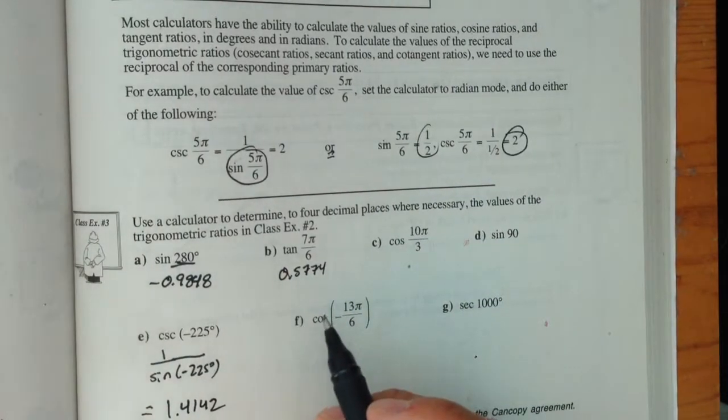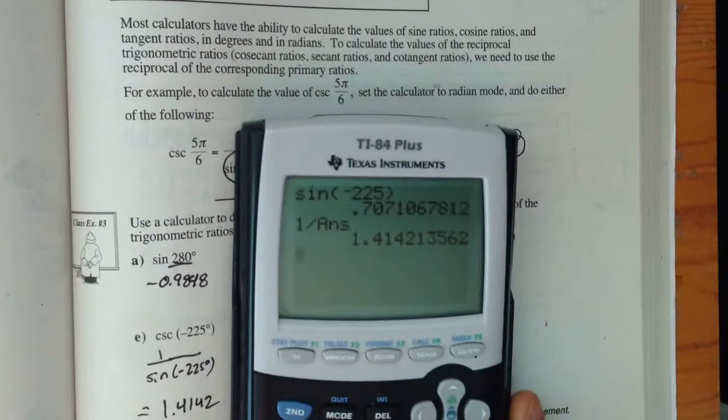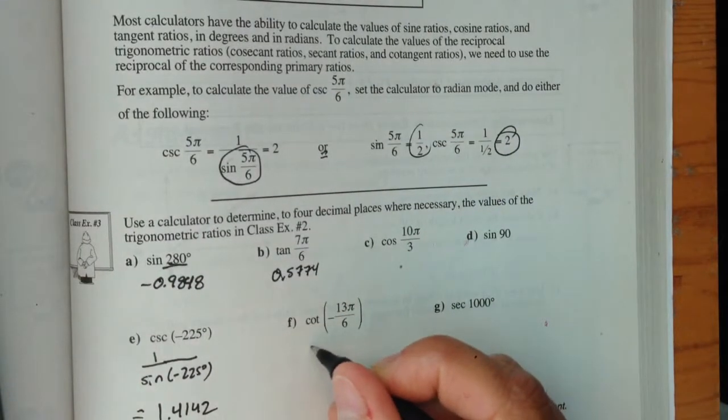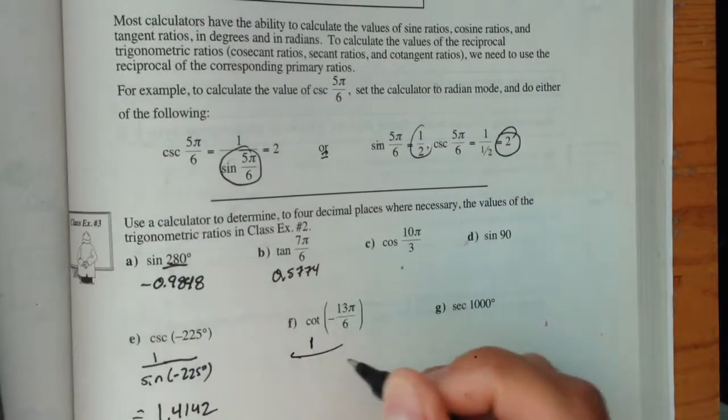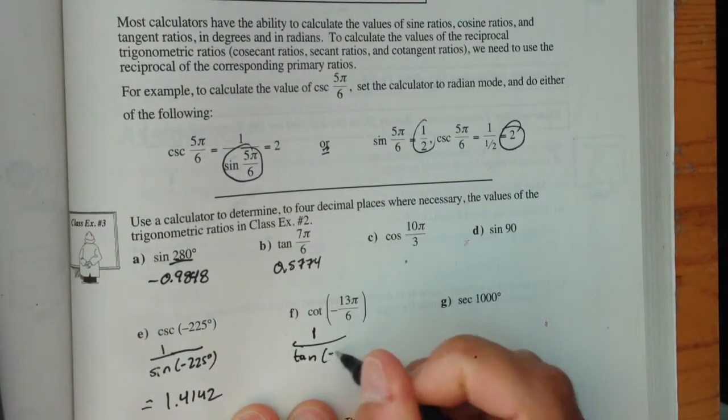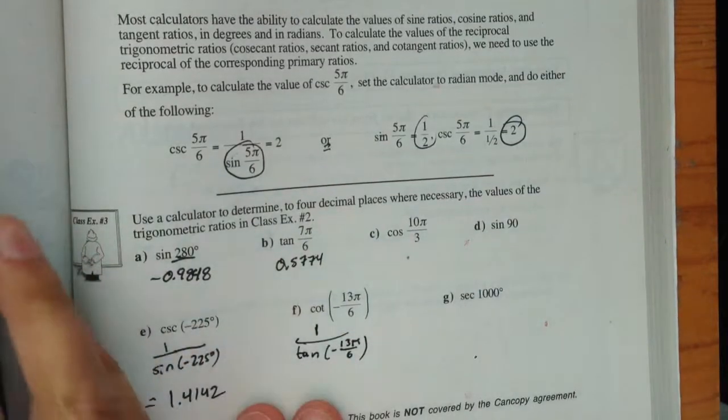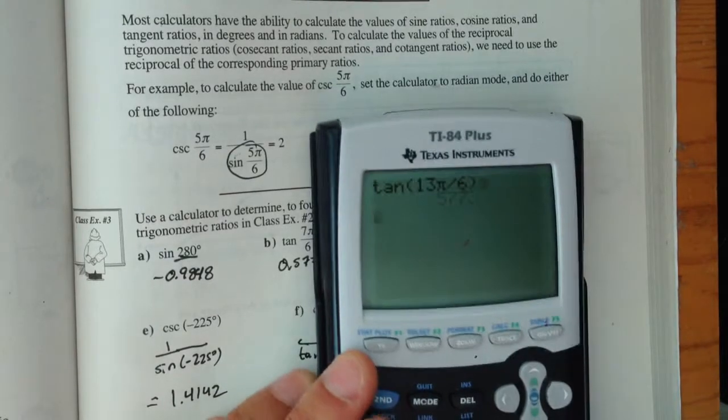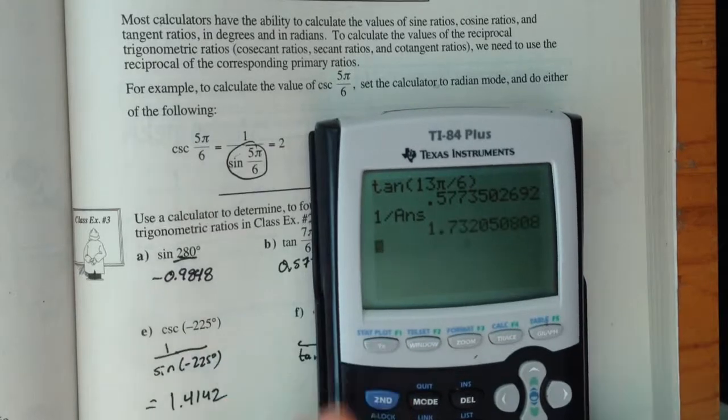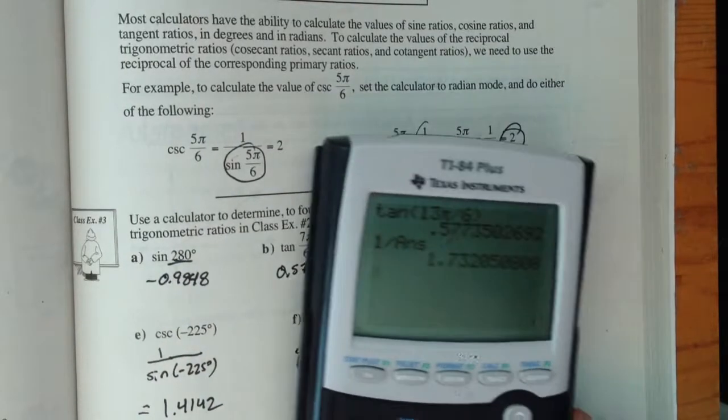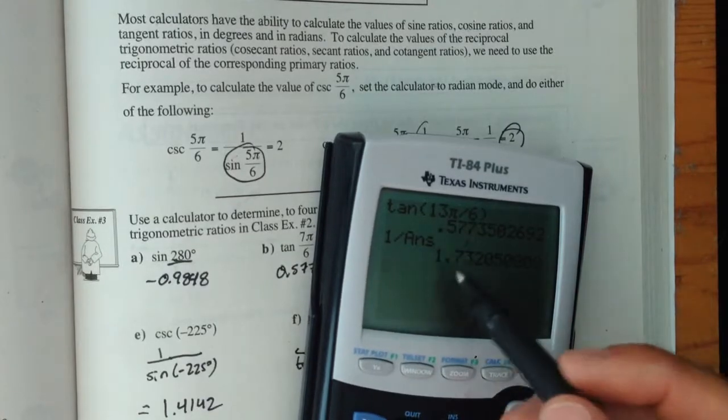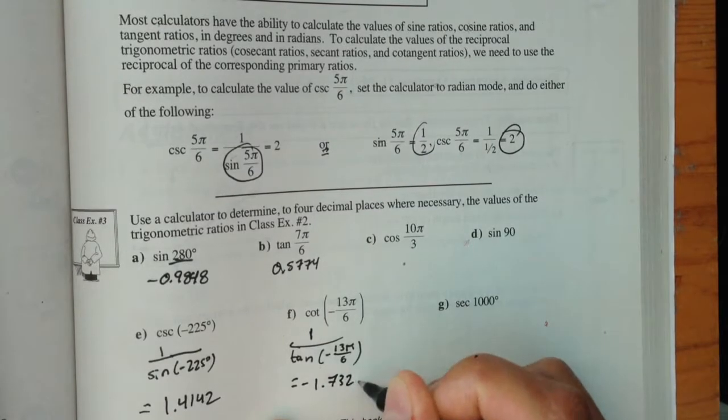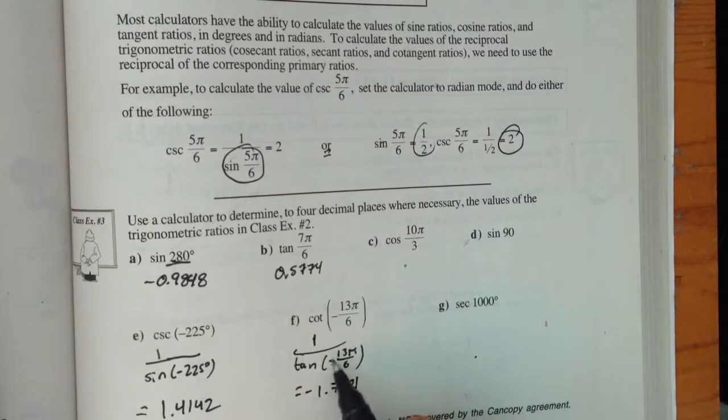Now I'm looking at the cotangent of 13π over 6. I've got to go back to my mode and switch over to radians. But remember, that's tangent, right? So that's going to be the same thing as saying 1 over the tangent of 13π over 6. So tangent 13π divided by 6, 1 divided by that answer, and we get negative 1.7321. I forgot to put that negative in the calculator.